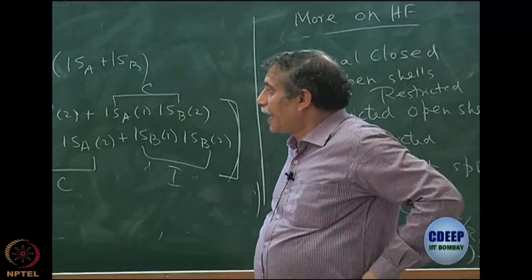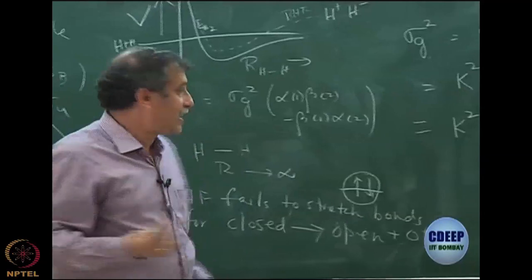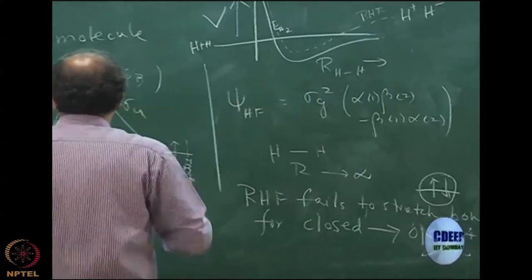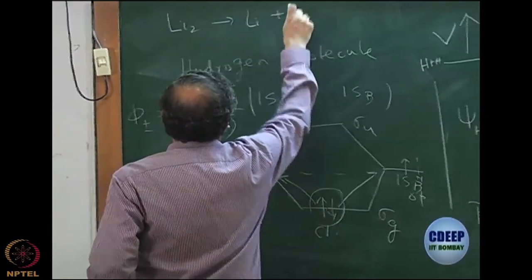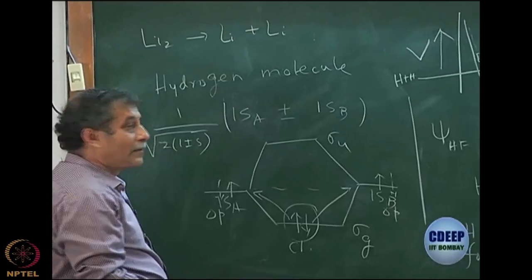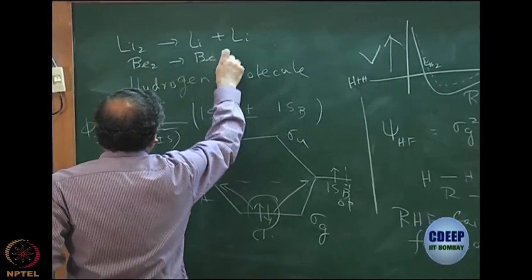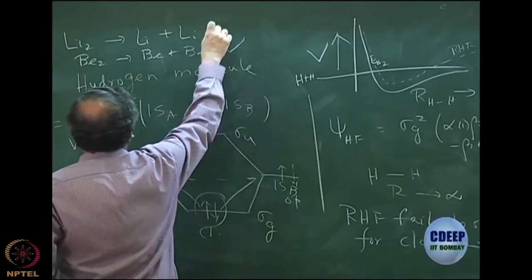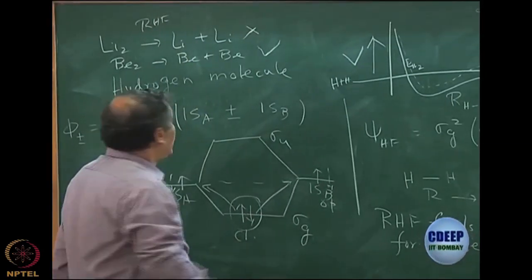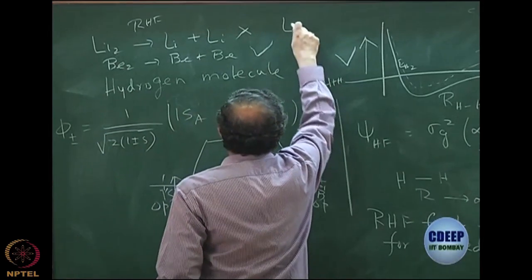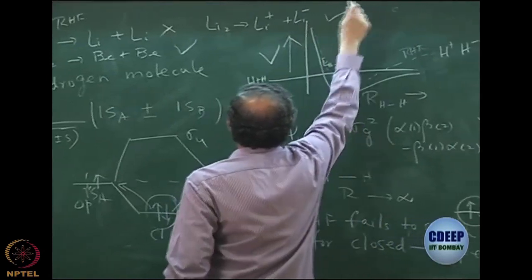In fact, it is well realized today and one of the problems is because of the spin. Spin is a very important part to understand this failure. It is today understood that not only hydrogen, but if I do Li2 to Li plus Li, again there is a failure. However, if I do beryllium dimer, Be2 to Be plus Be, RHF is good. This is not good, but this is good. Same way, if I want to break Li2 to Li+ plus Li-, RHF is good.